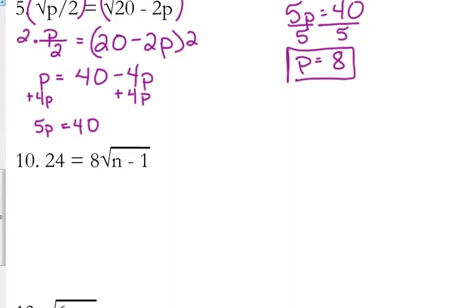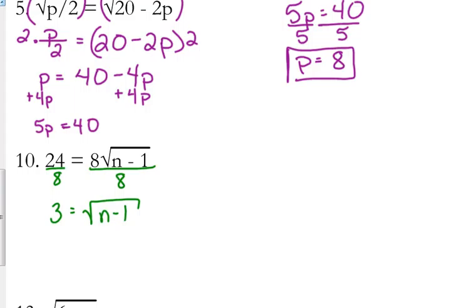Let's look at number 10 — finally one where we have to worry about that first step. The radical is not isolated because there's an 8 in front of the square root. What's going on between the 8 and the square root is multiplication, so we do the opposite and divide both sides by 8. 24 divided by 8 is 3. Now our square root is isolated — it doesn't have that 8 in front anymore.